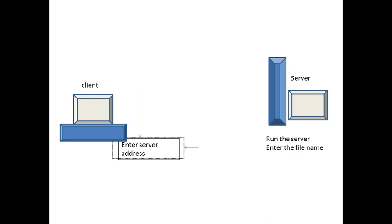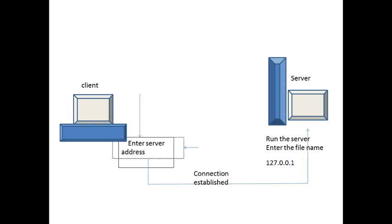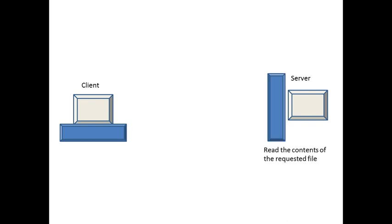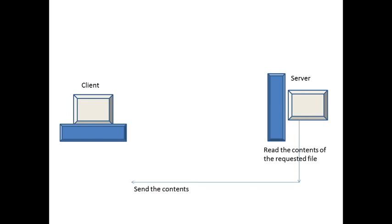After you run the client, we need to enter the server address. The server address is 127.0.0.1, which is passed to the server and the connection is established. After the connection is established, the server reads the contents of the file which is given, and sends the contents of the file to the client.